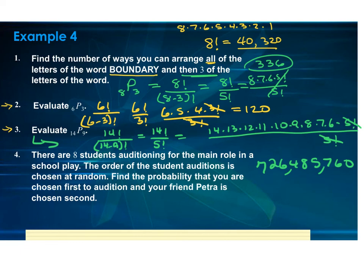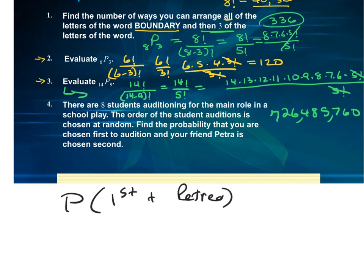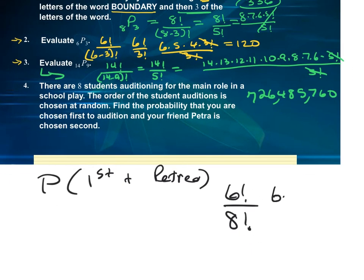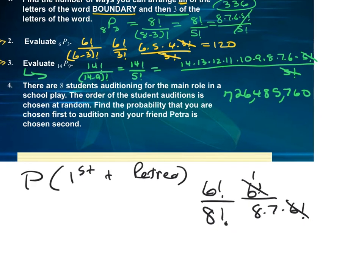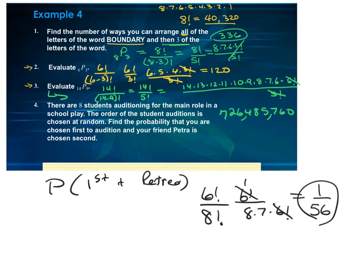The last example is similar to the parade problem. There are eight students auditioning for the main role in a school play and the order is chosen at random. Find the probability that you're first and your friend Petra is chosen second. Out of eight total, once you remove yourself and Petra, six are left. So we do six factorial over eight times seven times six factorial. The six factorials cancel, leaving one over eight times seven, which is 1/56.